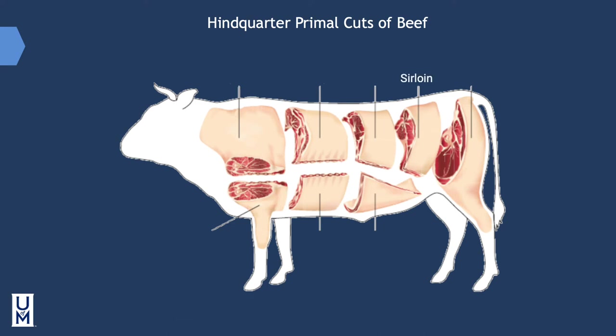The sirloin is located in the hindquarter, between the short loin and the round. It accounts for approximately 7% of carcass weight and contains part of the backbone and a portion of the hip bone. The sirloin produces bone-in or boneless roasts such as the top sirloin butt and the bottom sirloin butt tri-tip, as well as steaks that are flavorful and tender. With the exception of the tenderloin portion, however, the subprimals and fabricated cuts from the sirloin are not as tender as those from the strip loin. Cuts from the sirloin are cooked using dry heat methods such as broiling, grilling, or roasting.